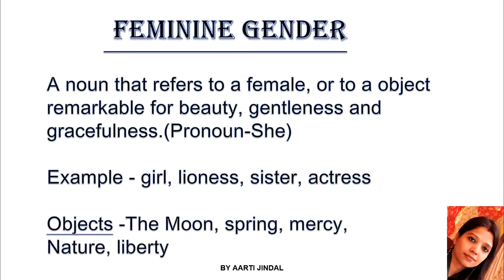Let us discuss some more examples of feminine gender — objects: the moon, spring, mercy, nature, liberty. These are objects that show beauty, gentleness, and gracefulness. For instance, summer and winter are in masculine gender because we feel immense heat and cold respectively. Spring, being a very gentle season that everyone enjoys, comes under feminine gender.